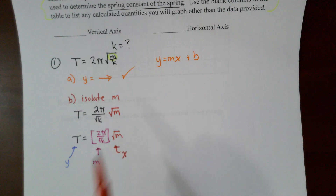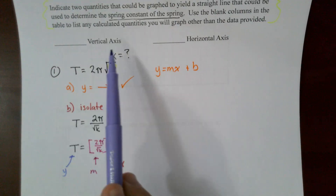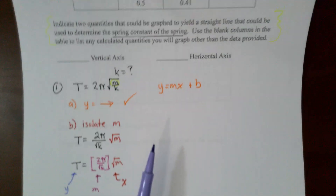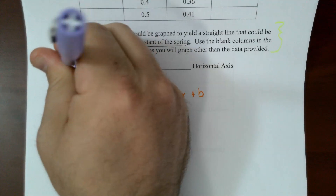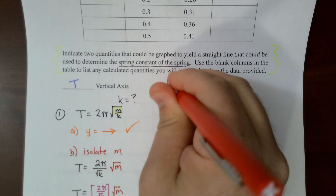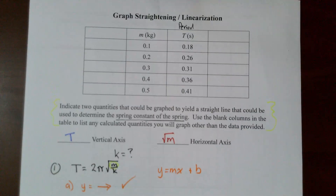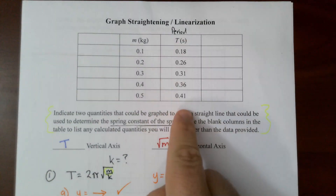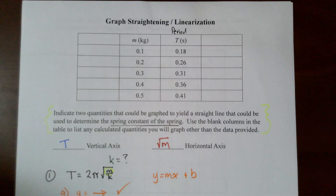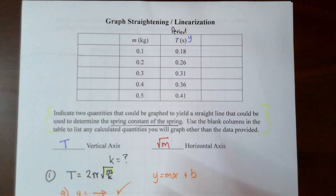An important thing to realize: if a set of numbers is a variable — in this case m — then a function of that set of numbers is also a variable. So m is a variable and √m is also a variable. That means I'll put T on the vertical (y) axis and √m on the horizontal (x) axis.